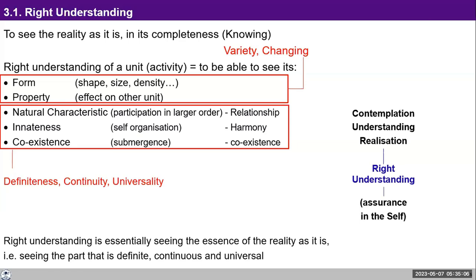If I am looking at the property, then I will also see its impact on another unit. For that, you have to try to see the interaction between two units. For instance, that fruit I want to eat — now I will also look at the property, meaning what kind of impact it has on the body when I eat it. Whether it nurtures the body or harms the body — that property I will be able to see at the level of thinking.